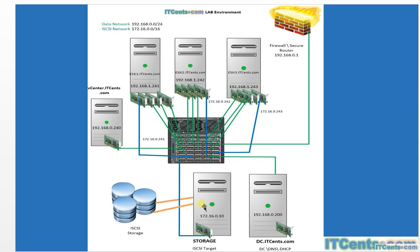The storage server will share iSCSI storage across two different networks: the data network represented in green and the iSCSI network represented in blue. There's a firewall securing everything. I'll have three ESXi servers, one vCenter, one DNS/AD server, and the storage server. Each ESXi server will have 12 GB of RAM and an 8-core CPU. The vCenter VM will also have 12 GB of RAM.